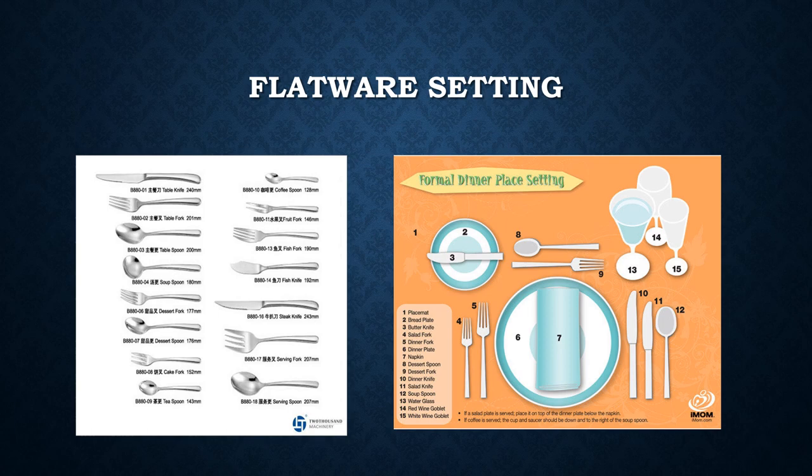Looking at the different types of forks: on the left side, the first is the normal table fork we are all familiar with. Below that is the dessert fork, which is slightly smaller than the table fork. Then we have the cake fork, whose tines are flat and broad — designed for eating cake. On the right column there is a fork with only two tines, which is used for eating fruit. We also have the fish fork and a serving fork, which is quite large in size.